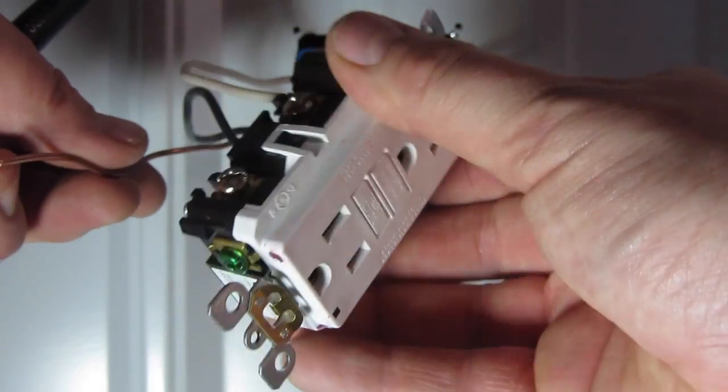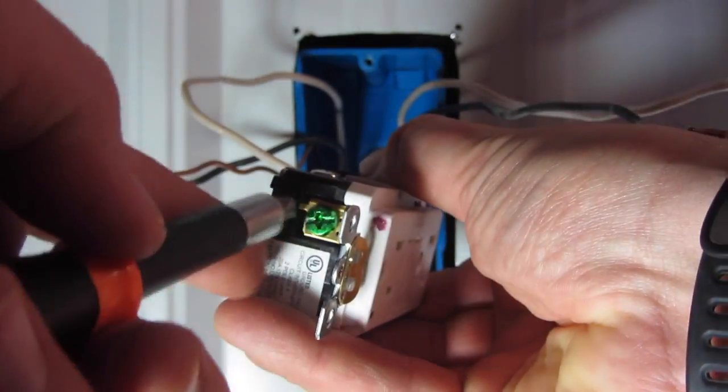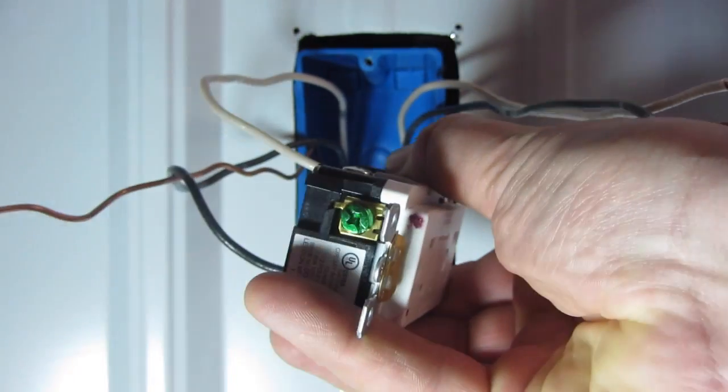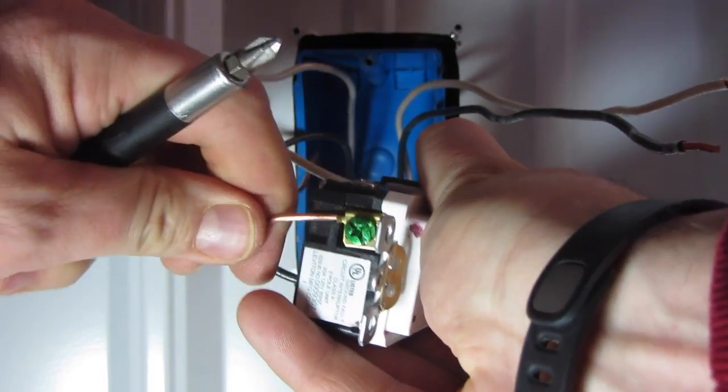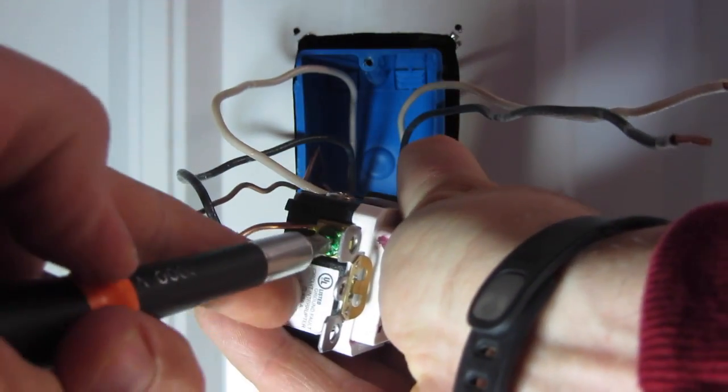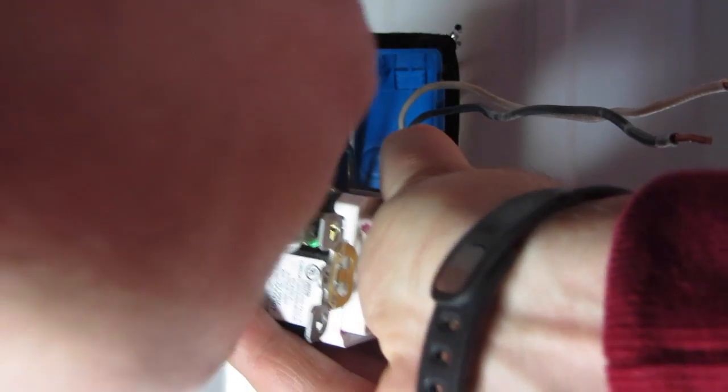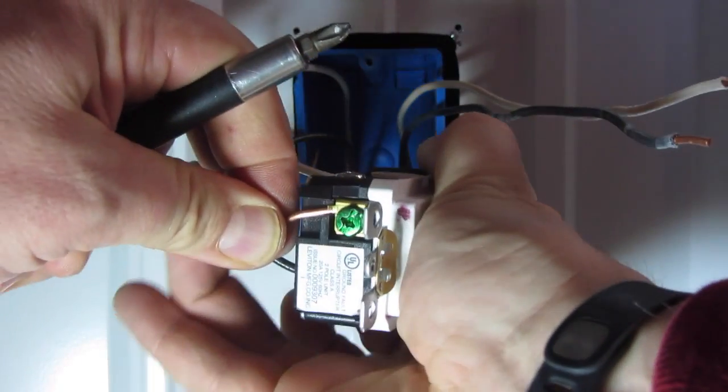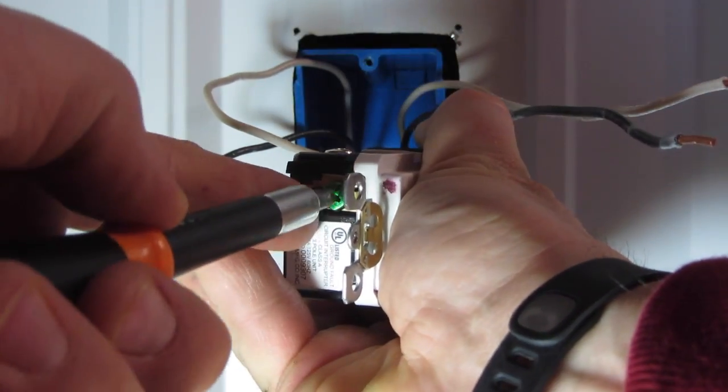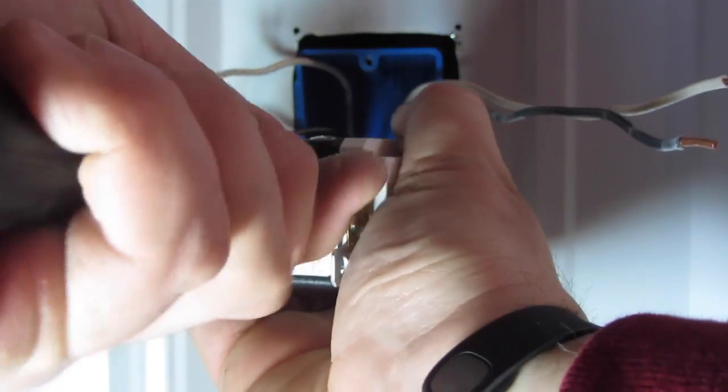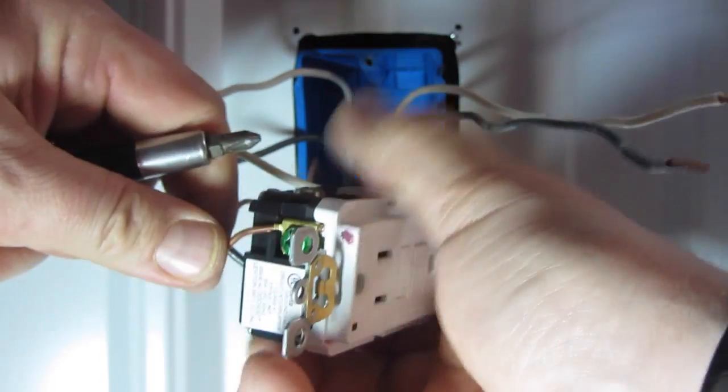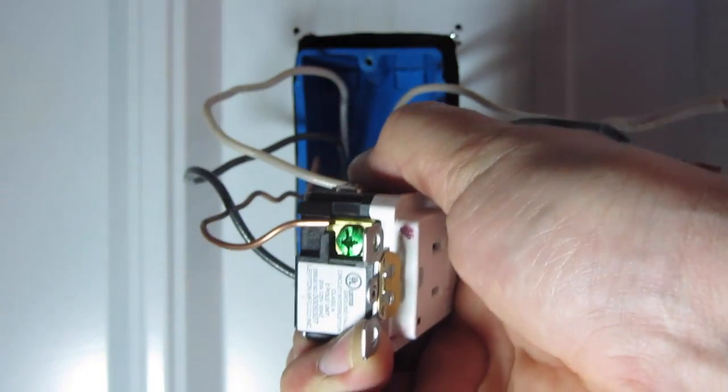Now, for the ground, which is the green screw, I will slip the ground wire in and tighten it in. Make sure it is real tight. And test it. It is tight.